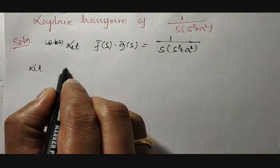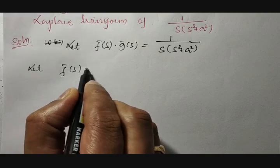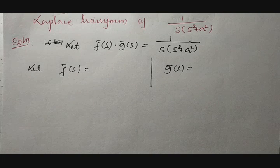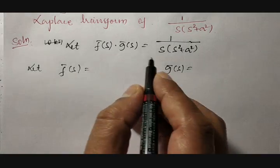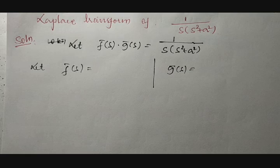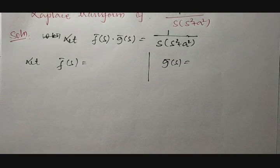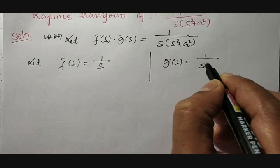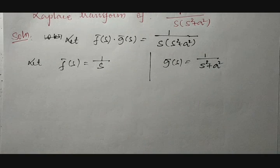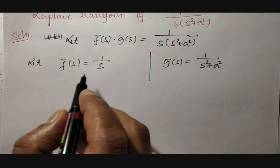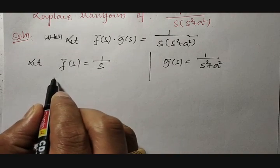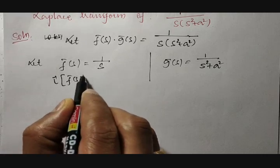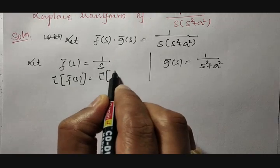Therefore, from here let us split up what is f̄(s) and what is ḡ(s). So f̄(s) is equal to 1 by s, whereas ḡ(s) is equal to 1 divided by s squared plus a squared. Then we need to apply inverse Laplace on both sides. Laplace inverse of f̄(s) is equal to Laplace inverse of 1 by s.